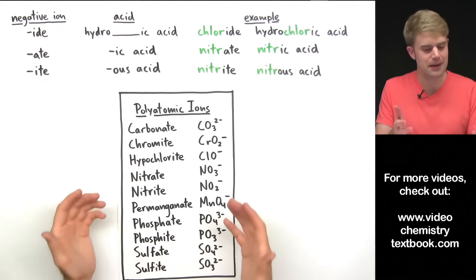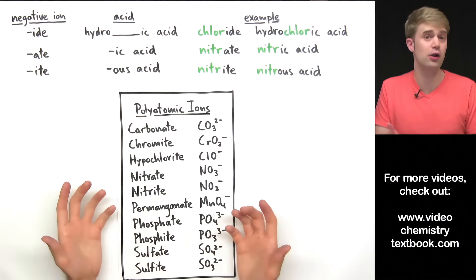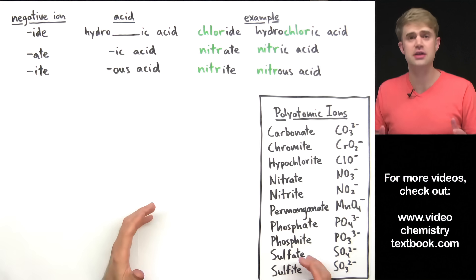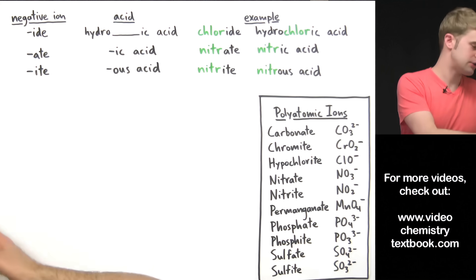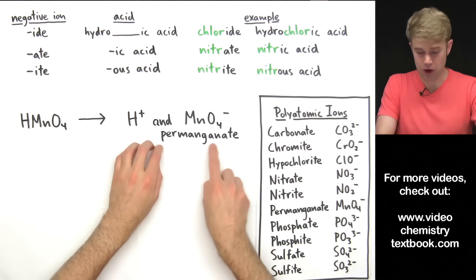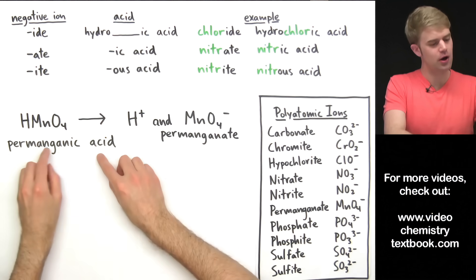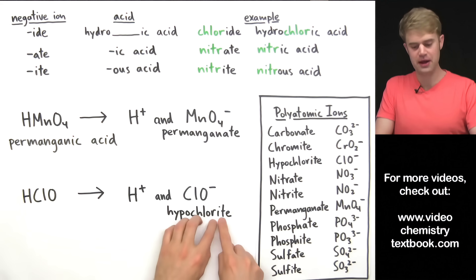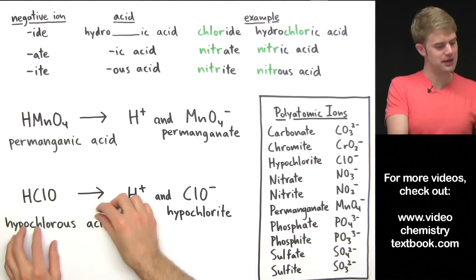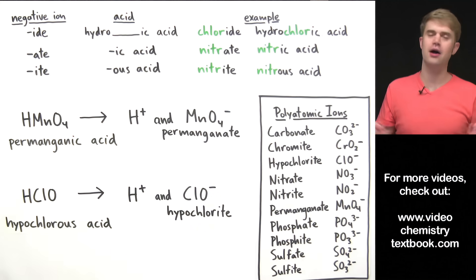Sometimes people get tripped up when naming acids that contain polyatomic ions starting with 'hypo' or 'per,' but naming those acids is just the same as any other. All you do is look at the ending. For example, an acid containing permanganate ends in -ate, so we change the -ate to -ic and call it permanganic acid. An acid containing hypochlorite has -ite, so we change it to -ous and call it hypochlorous acid. If you run into a hypo or per polyatomic ion, just focus on the letters at the very end.